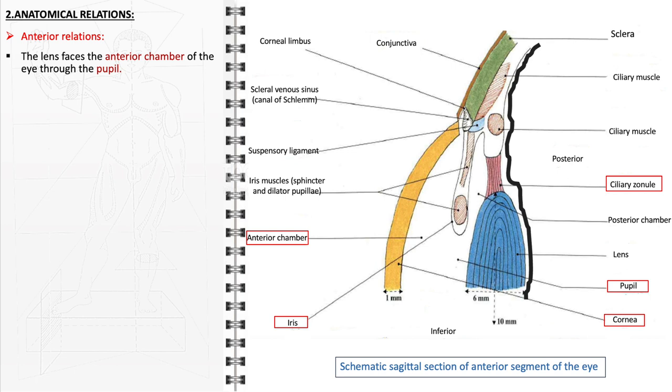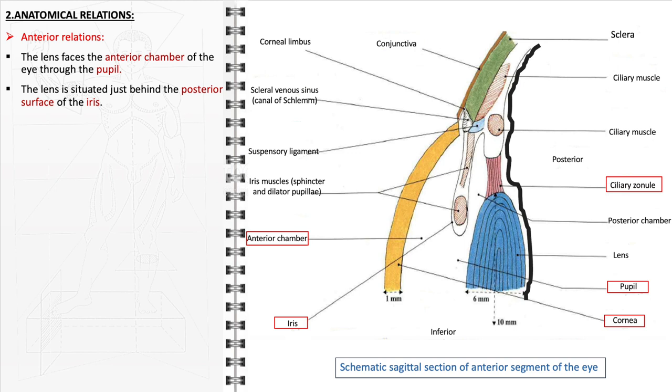The anatomical relations of the lens within the eye are essential for its function and positioning. Anteriorly, the lens is oriented towards the anterior chamber of the eye, a space filled with aqueous humor, visible through the pupil, the central opening in the iris. It is positioned immediately behind the posterior surface of the iris. This proximity is crucial as the iris regulates the amount of light that reaches the lens and subsequently aids in controlling how the lens focuses light onto the retina.